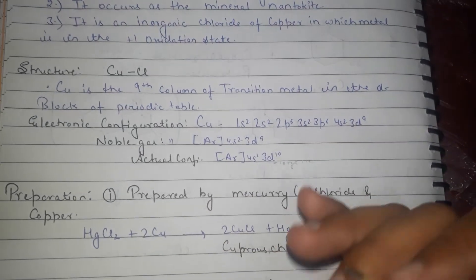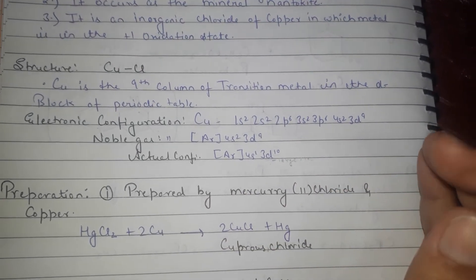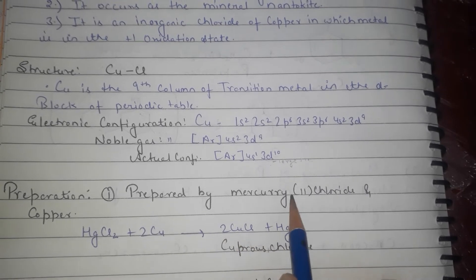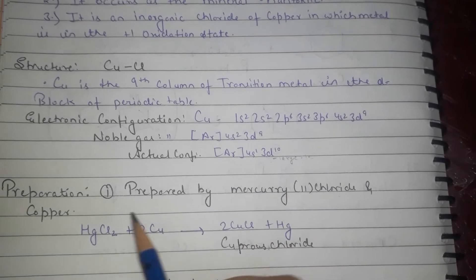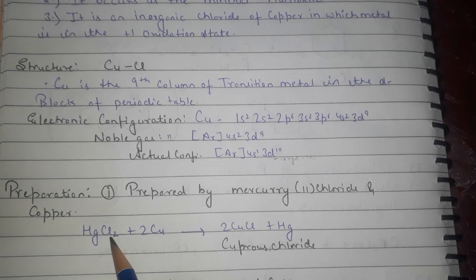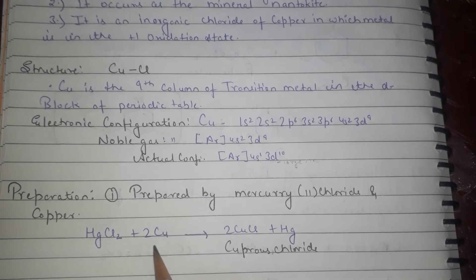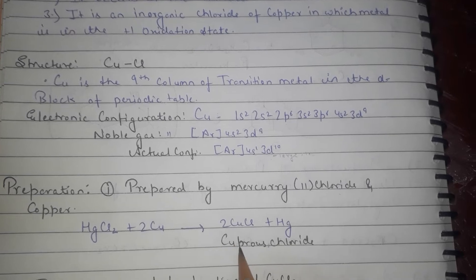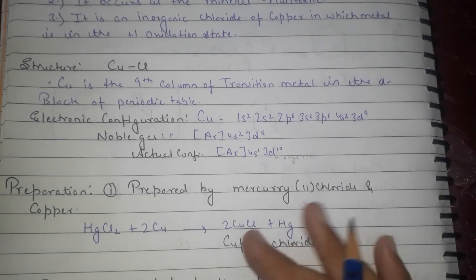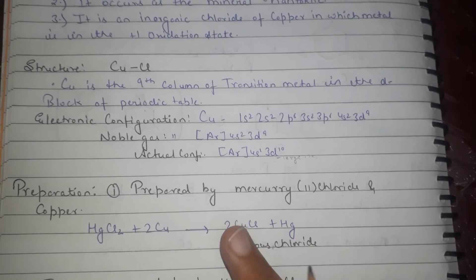Now first preparation of cuprous chloride: prepared by mercury dichloride and copper. HgCl2 plus 2Cu will give cuprous chloride plus Hg as a side product. So this is the first preparation.